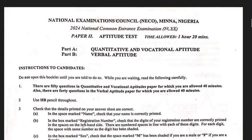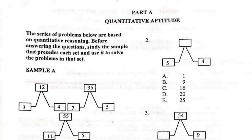Hello, you're welcome to today's lesson. We'll be looking at the National Examinations Council 2024 National Common Entrance Examination — that's NCEE Paper 2, Aptitude Test, Part A: Quantitative and Vocational Aptitude. That is where we are going to concentrate for today, looking at the quantitative reasoning of the Common Entrance. Let's go straight to the questions, Part A: Quantitative Aptitude.